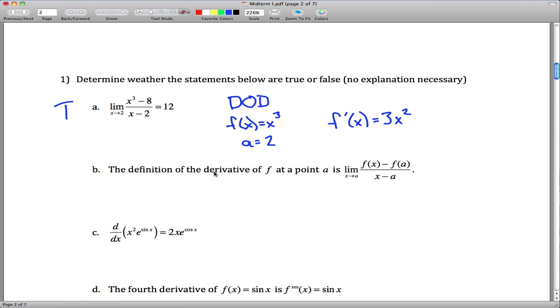Part B: the definition of the derivative of f at a point a is the limit as x approaches a of [f(x) - f(a)]/(x - a). That is true. That's just the definition of the derivative.